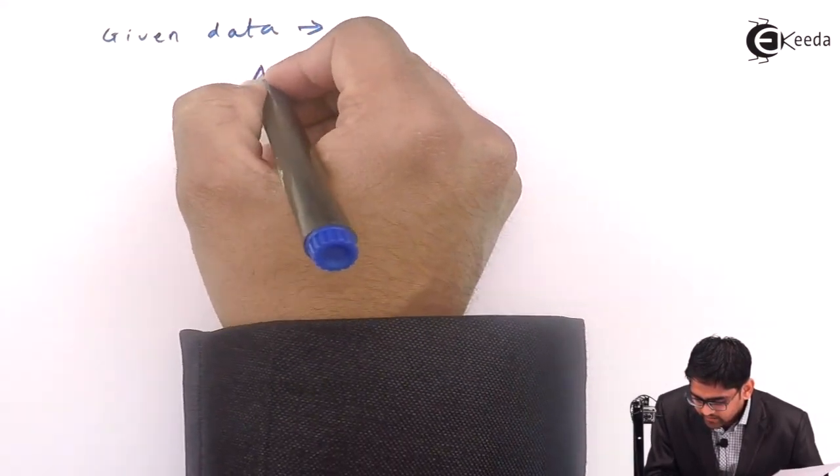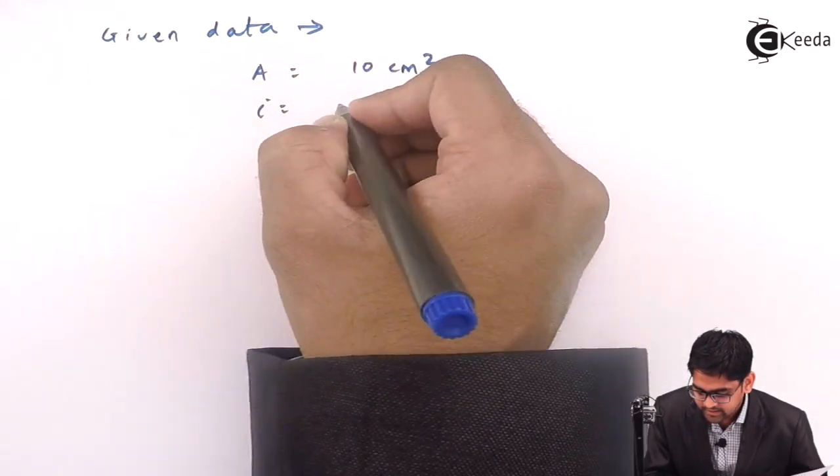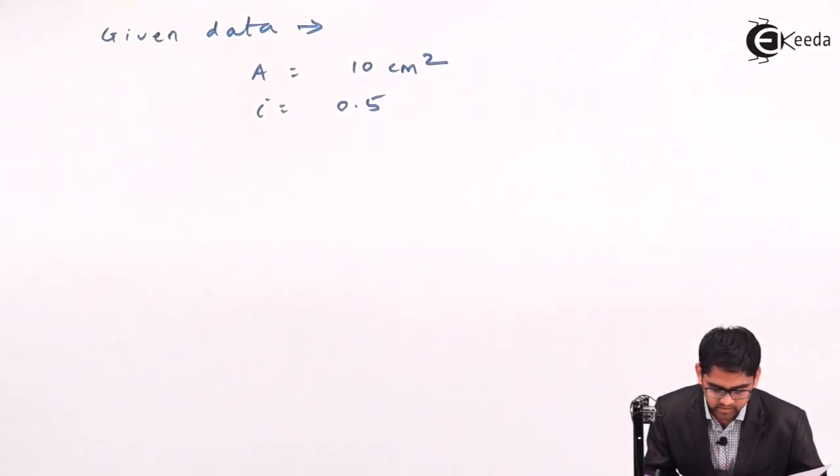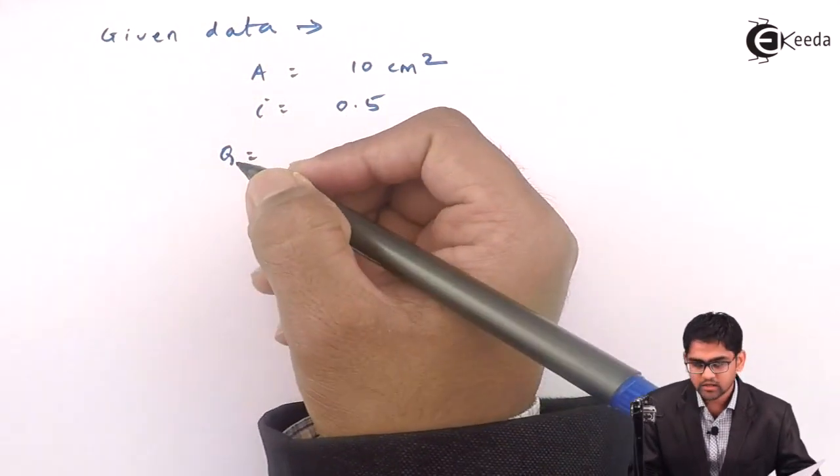So the area of flow given is 10 cm² and the hydraulic gradient is directly given as 0.5, and the amount of water collected from that data you can calculate the Q.